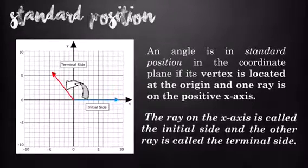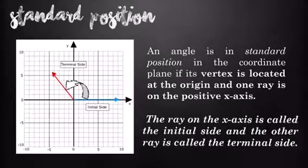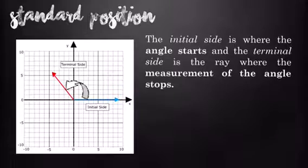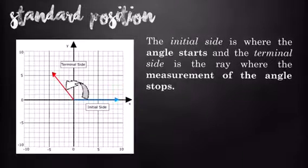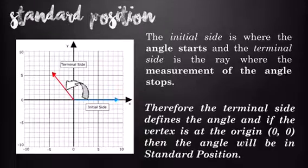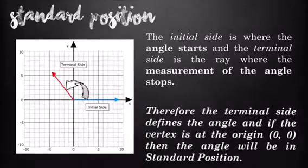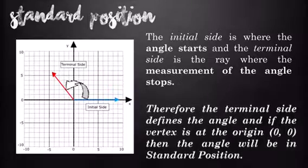The ray on the x-axis is called the initial side and the other ray is called the terminal side. The initial side is where the angle starts and the terminal side is the ray where the measurement of the angle stops. Therefore, the terminal side defines the angle. If the vertex is at the origin, then the angle will be in standard position.